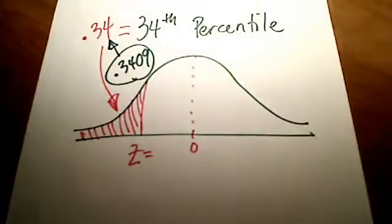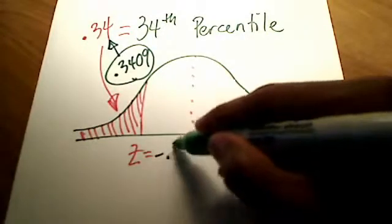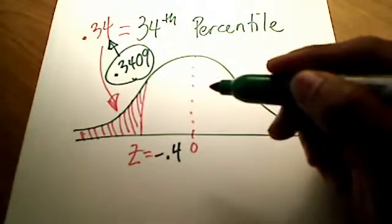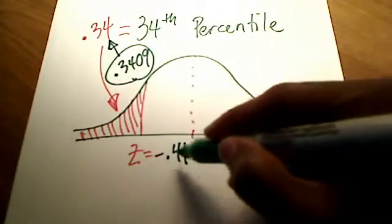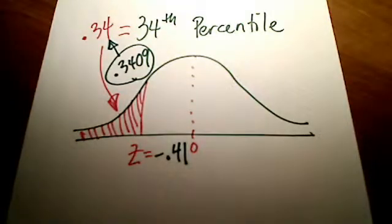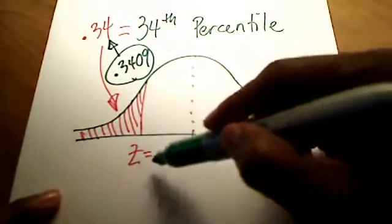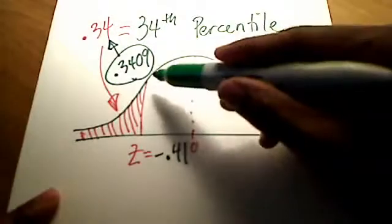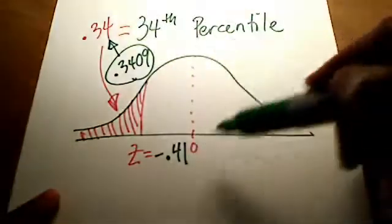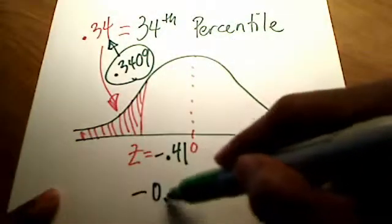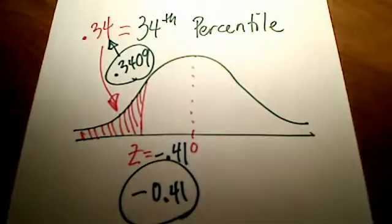And that number there, .3409, corresponds to a Z score of negative .41. So in this case here, this Z score that corresponds to, or the closest thing to the 34th percentile, is negative 0.41. That's what I would enter in on MyMathLab, or my homework assignment, or whatever it might be. So I hope the percentile makes a little bit more sense to you now.